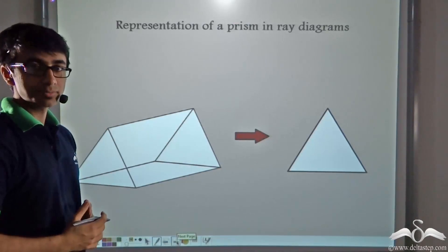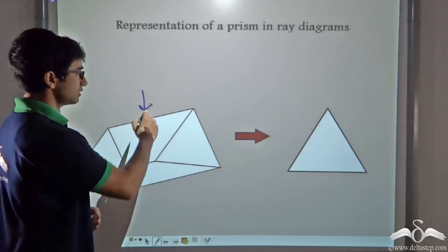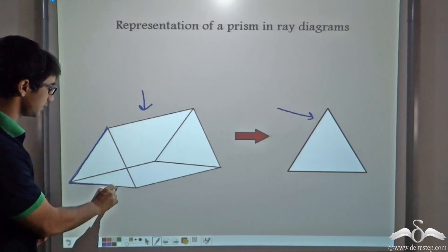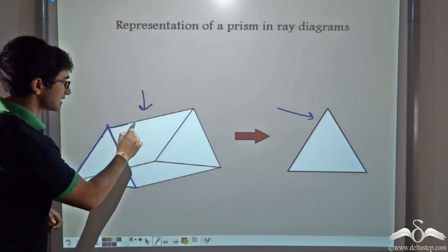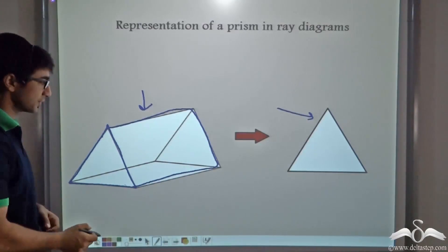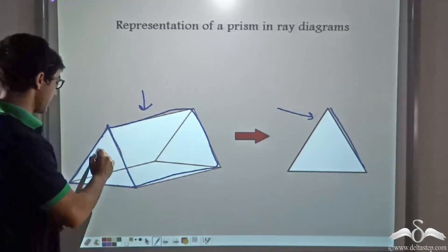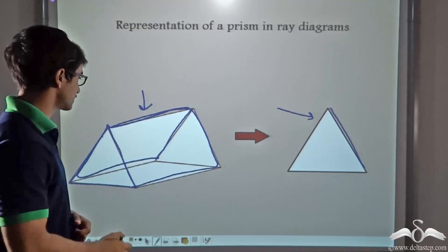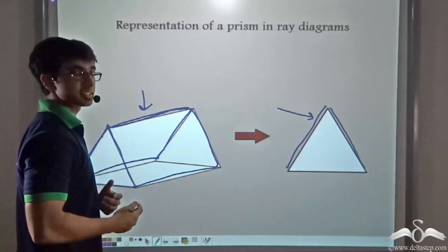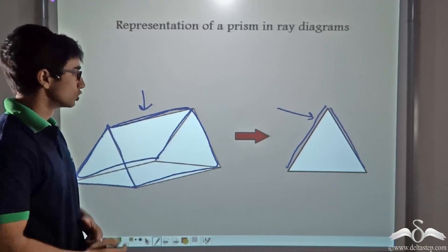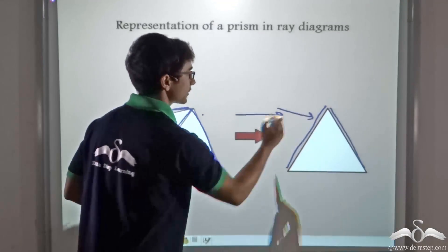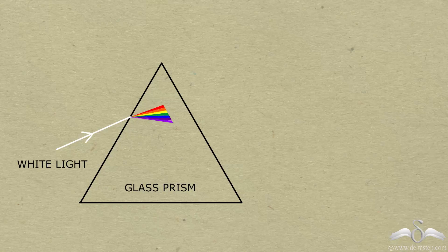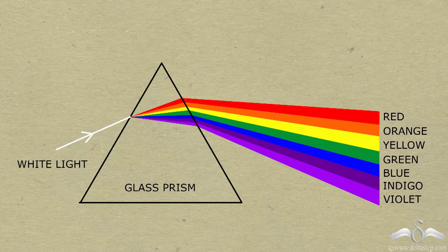In our ray diagrams when we discuss prisms, we shall be representing a prism as a triangle. When we look at a prism from the front, we can see a triangle. One side represents a refracting surface, and another side represents the second refracting surface. So in our dealings, a prism is represented by a triangle.